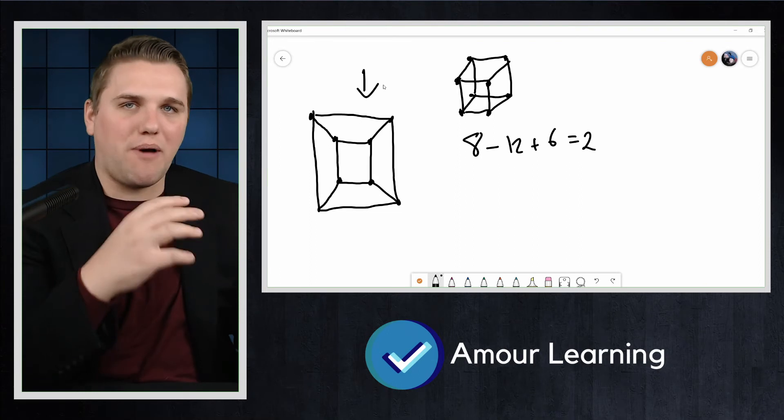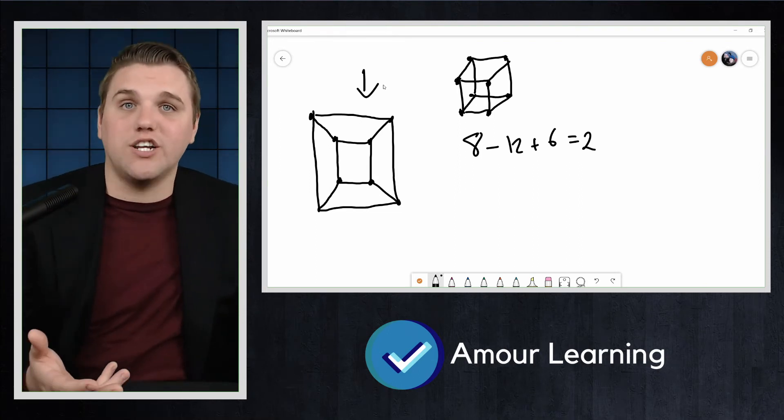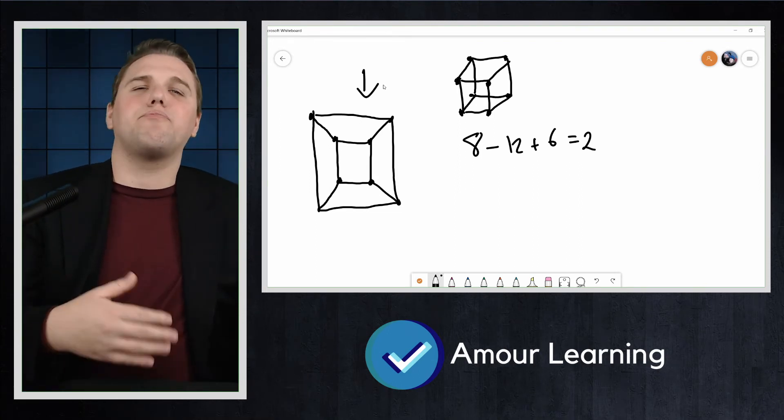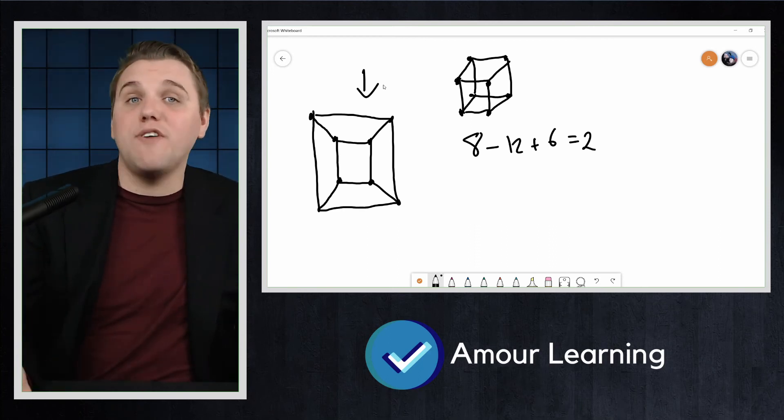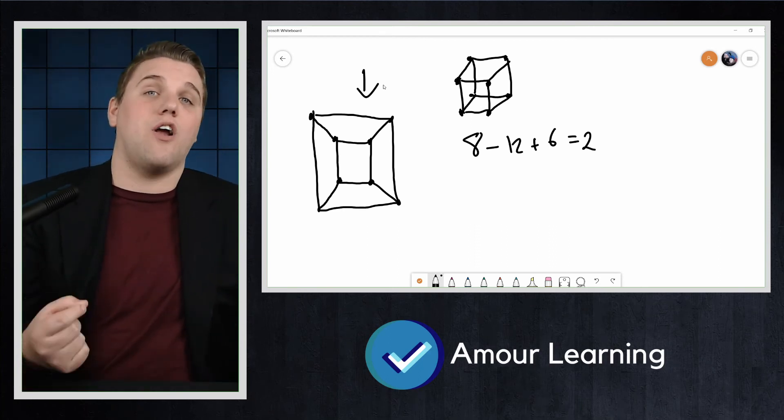In fact, every convex polyhedron can be projected onto the plane without edges crossing. Think of placing the polyhedron inside a sphere with a light at the center of the sphere.